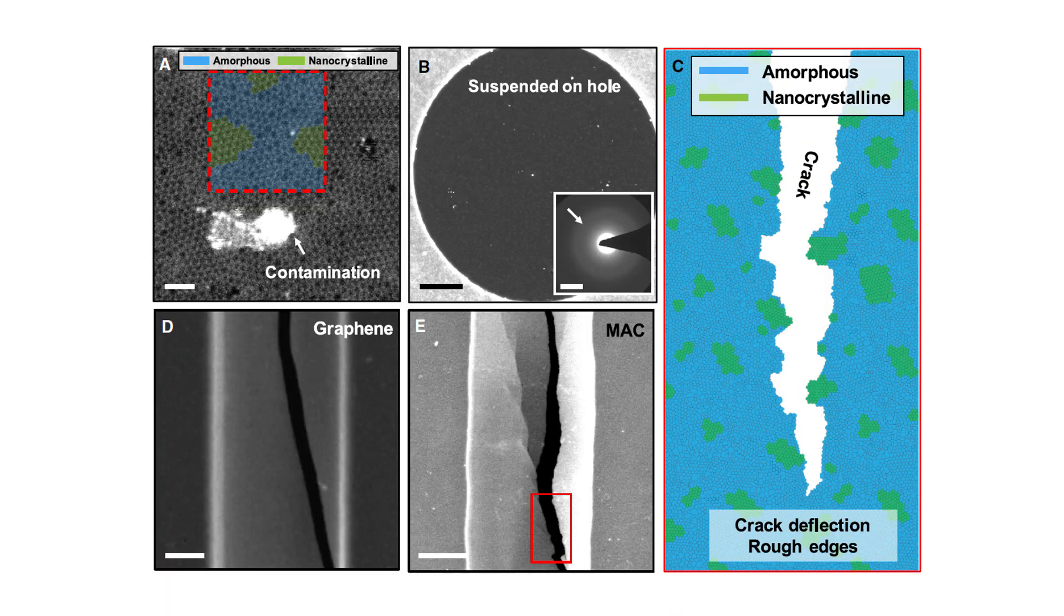Exactly. And as you mentioned, MAC's fracture toughness is quite extraordinary. In fact, some experiments point to up to an eight-fold increase in fracture energy compared to regular monolayer graphene. Let's break down why that's so important.